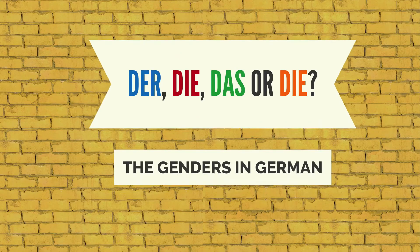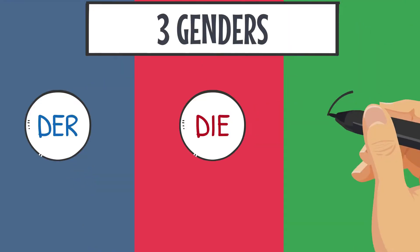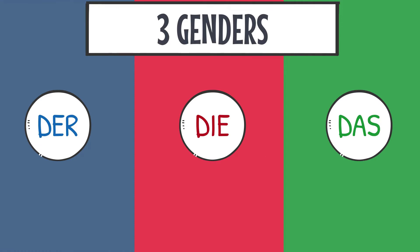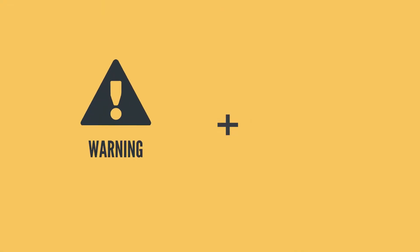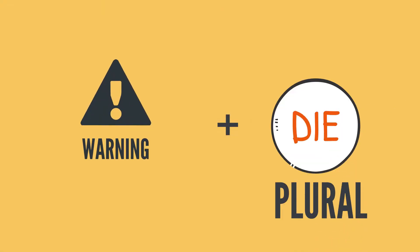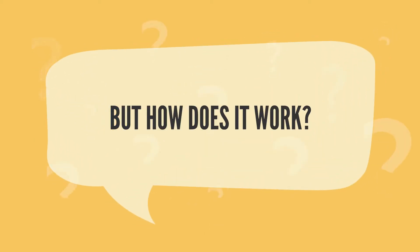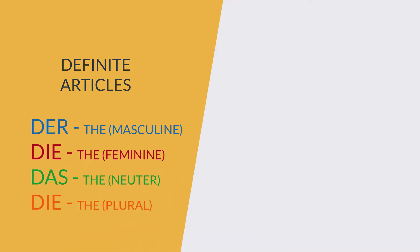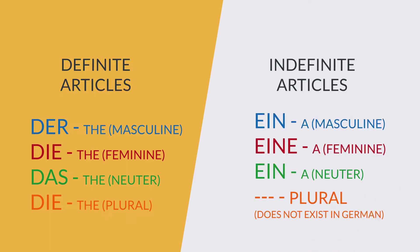Der, die, das — the genders in German. In German we basically have three genders: masculine, feminine, and neutral, and of course also one for plural. For the definite articles, like 'the', we have: masculine 'der', feminine 'die', neutral 'das', plural 'die'. And for the indefinite articles, like 'a', we have: masculine 'ein', feminine 'eine', neutral 'ein', and there's no indefinite article for the plural.